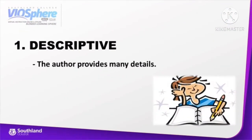Number one example is descriptive. The author provides many details in the paragraph or given text. In descriptive writing, the author does not just tell the reader what was seen, felt, tested, smelled, or heard. Rather, the author describes something from their own experience and through careful choice of words.